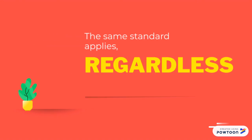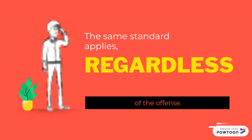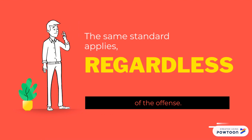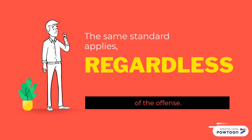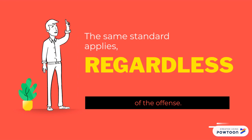The same standard applies regardless of the offense. Your internal compass may find it a bit easier to find someone responsible for a lower-level policy violation using the preponderance standard. You may internally feel like you need a little bit more for a more serious charge, but that is inconsistent. Our standard is what our standard is.